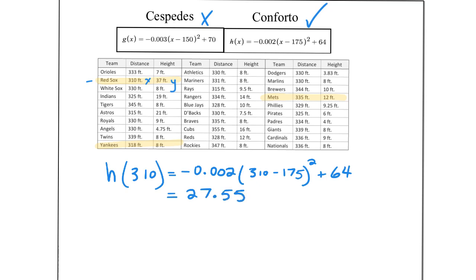Algebraically here, we do want to be careful with PEMDAS rules and making sure that we don't make any algebraic mistakes. Graphic calculators can obviously be utilized. So what we find is that at 310 feet, the path of Michael Conforto's ball is actually only 27.55 feet in the air.